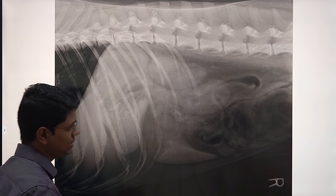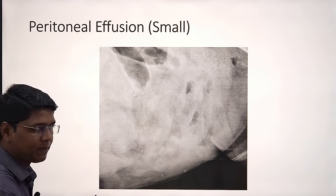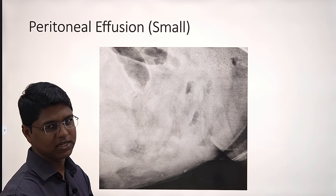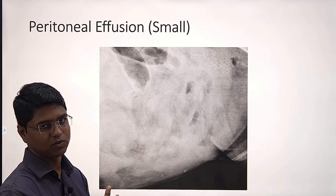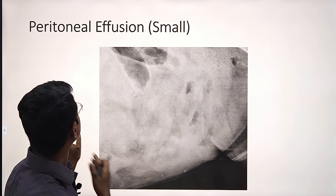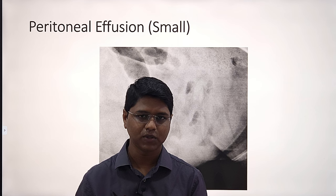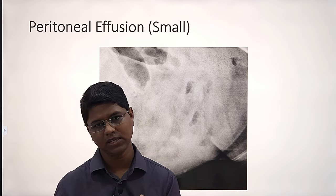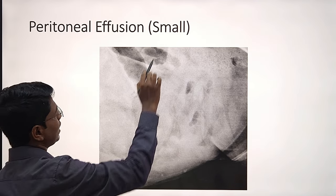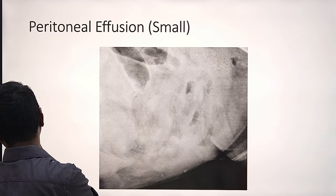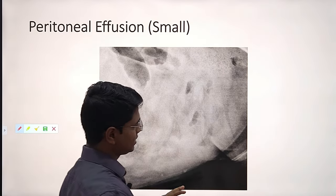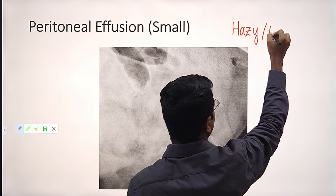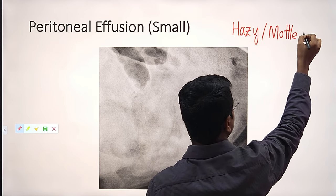Peritoneum has very few pathologies. The most important one is peritoneal effusion — sometimes called ascites. In peritoneal effusion, you may find different degrees of fluid accumulation: small, moderate, and large amounts. When there is a small amount of fluid accumulation, the characteristic x-ray finding is that the abdominal organs will be hazy or mottled.